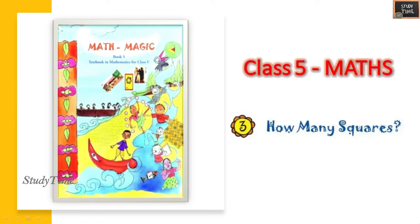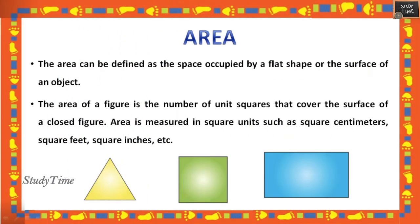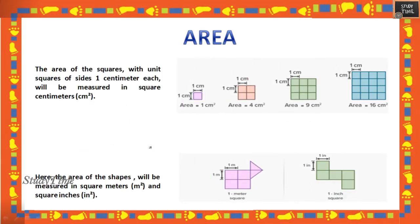First, the basics: Area. Area can be defined as the space occupied by a flat shape or the surface of an object. It can be measured in centimeters, feet, or inches. Here the area is measured in centimeters — 1 square centimeter, 4 square centimeters, 9 square centimeters, 16 square centimeters. You count the number of squares.